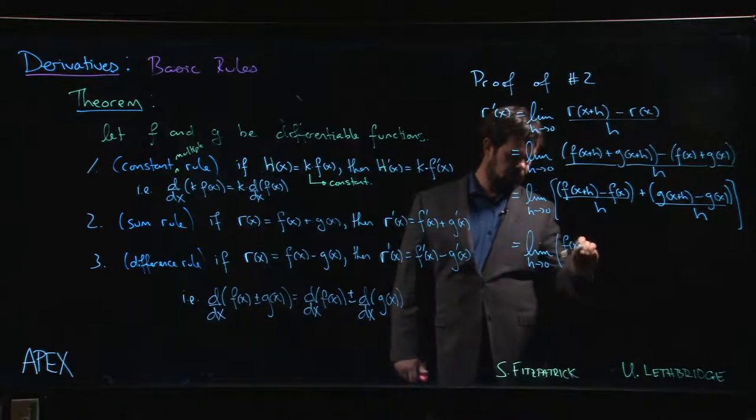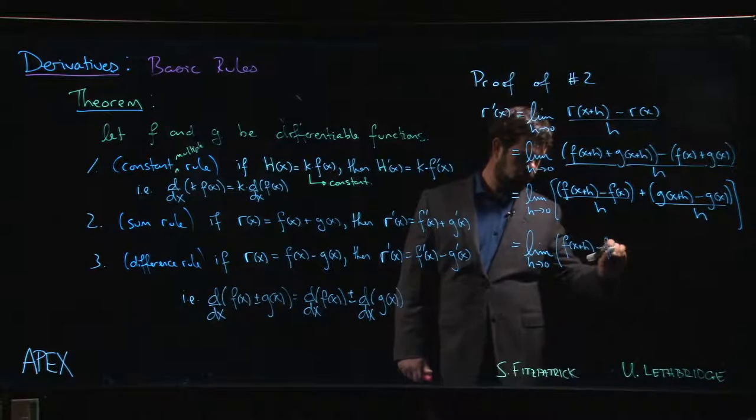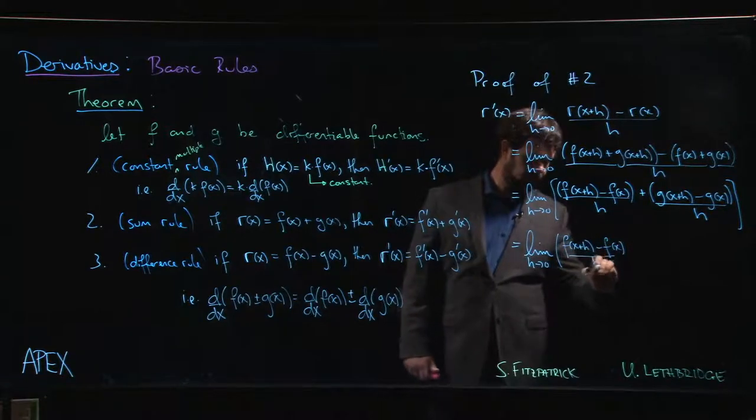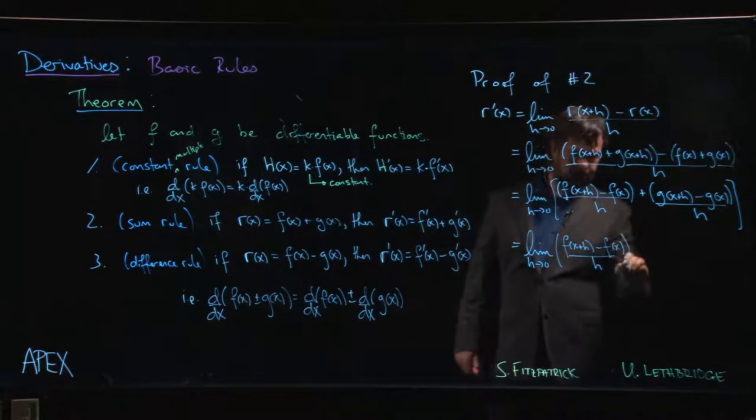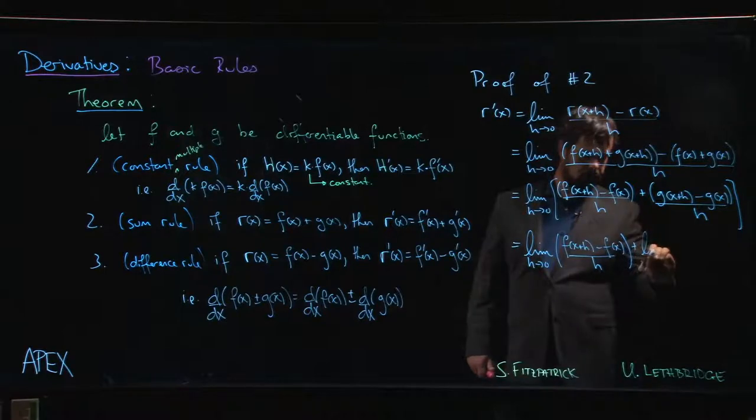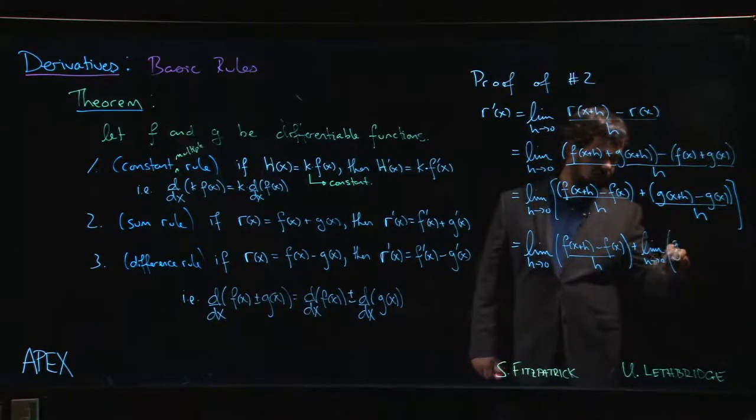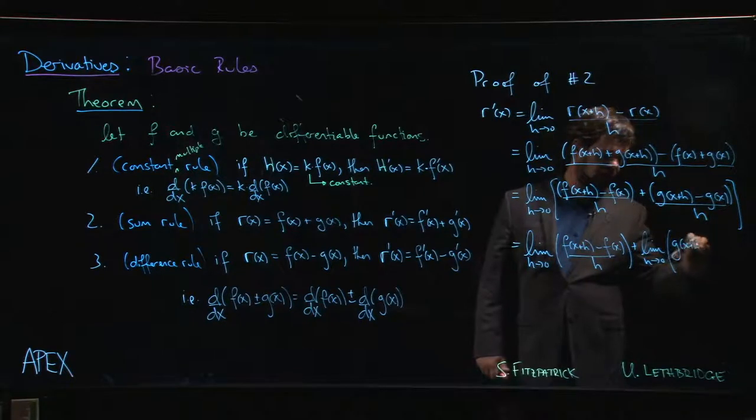So we have the limit as h goes to 0 of f of x plus h minus f of x over h, and then the limit as h goes to 0 of g of x plus h minus g of x over h.